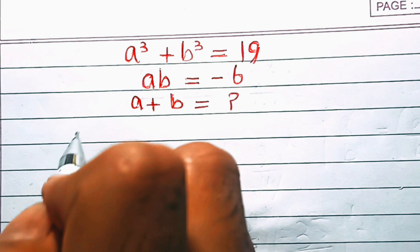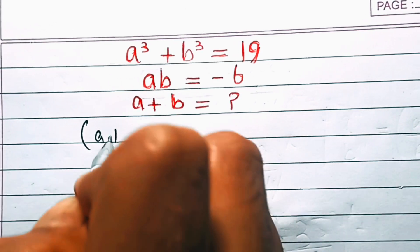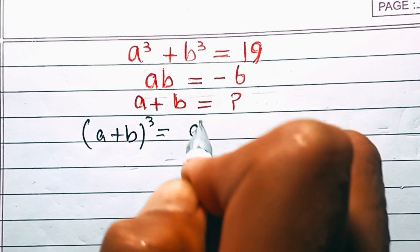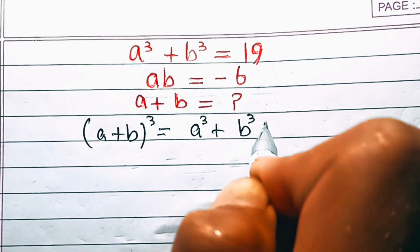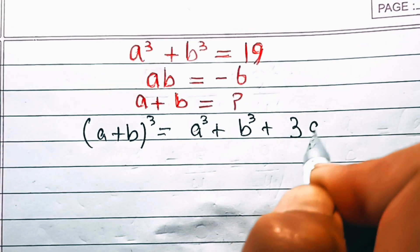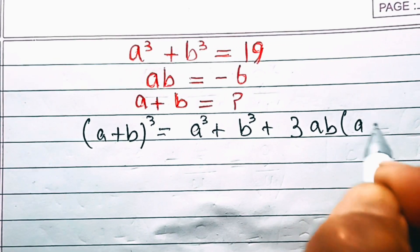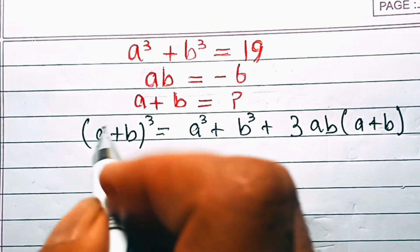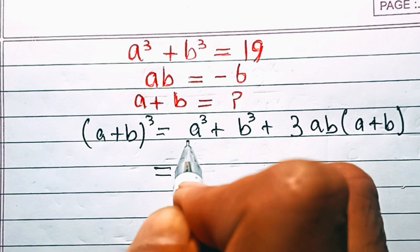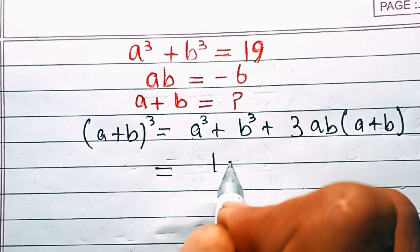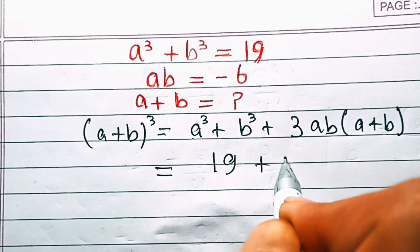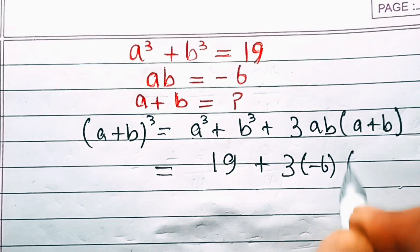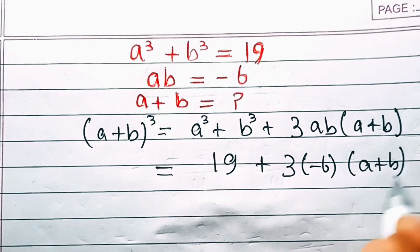First of all, we know that (a+b)³ is equal to a³ + b³ + 3ab(a+b). So this is equal to: a³ + b³ is 19, plus 3 times ab, and ab is minus 6, into (a+b).